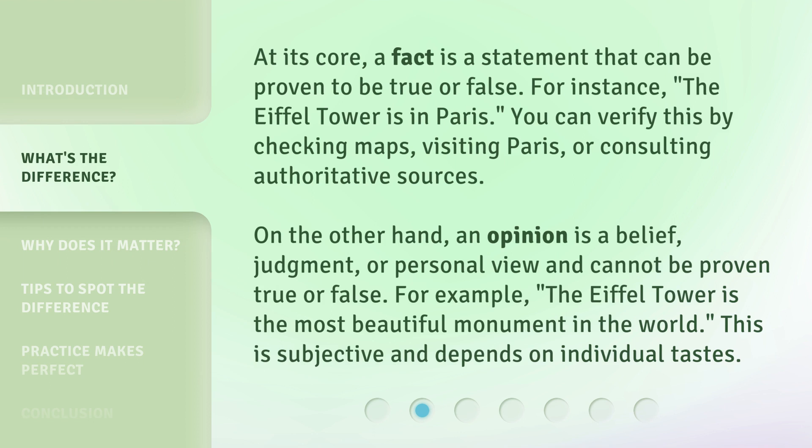At its core, a fact is a statement that can be proven to be true or false. For instance, the Eiffel Tower is in Paris — you can verify this by checking maps, visiting Paris, or consulting authoritative sources. On the other hand, an opinion is a belief, judgment, or personal view and cannot be proven true or false. For example, the Eiffel Tower is the most beautiful monument in the world — this is subjective and depends on individual tastes.